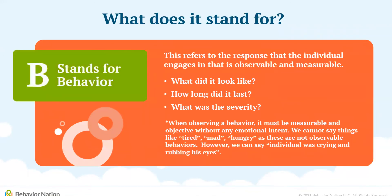Behavior is anything that we can measure and observe. We cannot say emotional states, such as sad or mad, are behaviors, because these are feelings and cannot be observed. However, we can state things like his arms were crossed or she began crying. Going back to our example, Johnny's behavior is crying, stomping his feet, and falling to the floor.